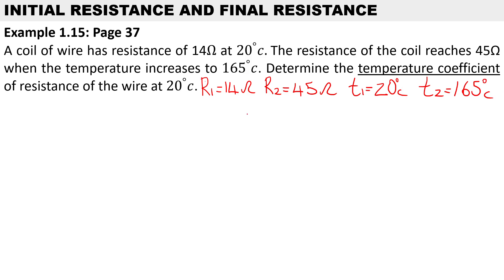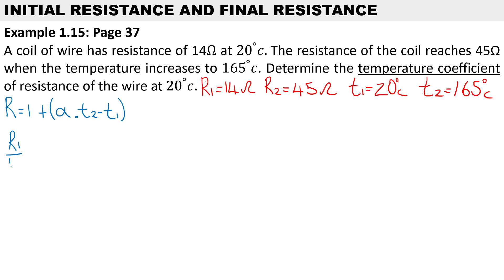Before we start calculating, let me remind you of the formulas we will be using. To calculate resistance, it is equal to 1 plus the temperature coefficient times the final temperature, where the temperature change is T2 minus T1. In this instance we need to calculate the temperature coefficient, so we rearrange to: R1 over R2 equals 1 plus the temperature coefficient times T1, all over 1 plus the temperature coefficient times T2.